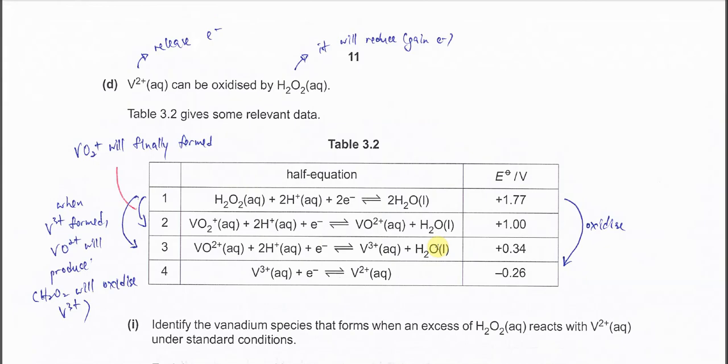Part D. V²⁺ can be oxidized by H₂O₂. From this statement, we know that when V²⁺ is oxidized, it must release electrons. It releases electrons and at the same time forms V³⁺. And the H₂O₂ will reduce, means it gains electrons. H₂O₂ with H⁺ gains electrons and forms H₂O.